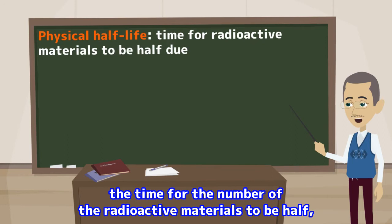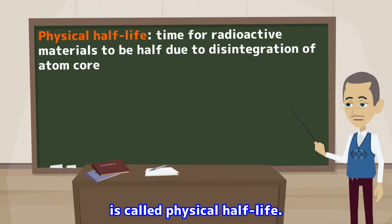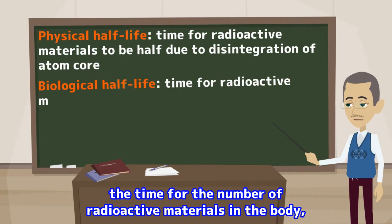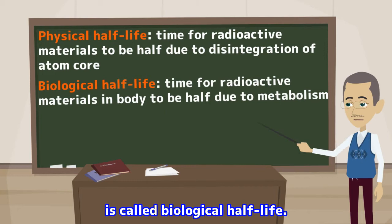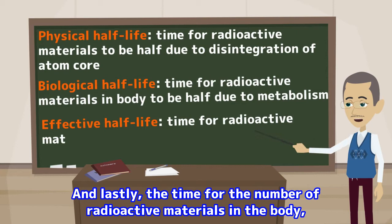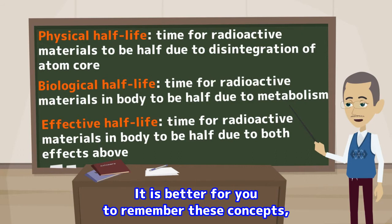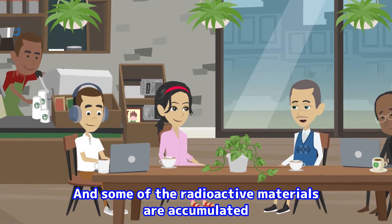As explained in another lecture, the time for the number of radioactive materials to be halved due to the disintegration of the atom core is called physical half-life. On the other hand, the time for the number of radioactive materials in the body to be halved due to metabolism is called biological half-life. And lastly, the time for the number of radioactive materials in the body to be halved due to both effects is called effective half-life. It is better for you to remember these concepts.